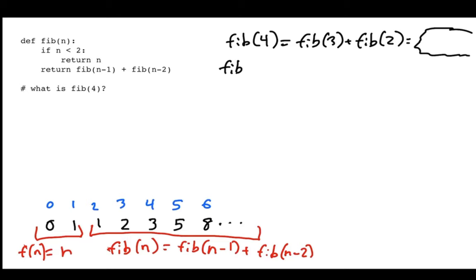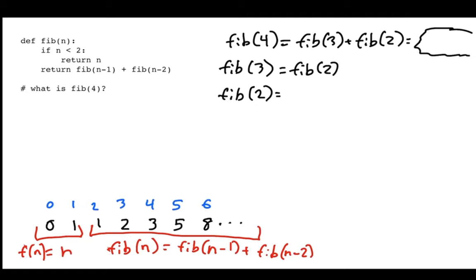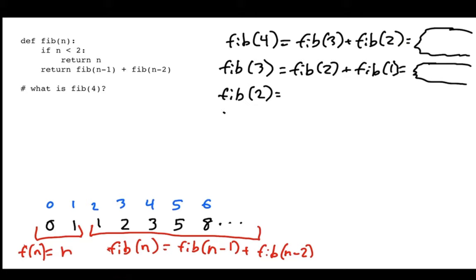So I have these two new problems: Fibonacci of 3 equals something, and Fibonacci of 2 equals something. I'll start with Fibonacci of 3. I haven't hit my base case yet, so Fibonacci of 3 is going to be Fibonacci of 2 plus Fibonacci of 1, which depends on another problem already on the board — Fibonacci of 2. I've also introduced a new problem: what is Fibonacci of 1? I need to keep track of all the things I have to solve to get an answer.